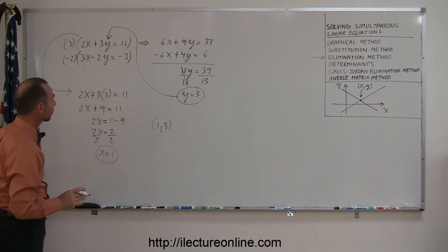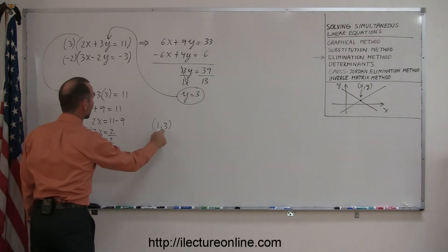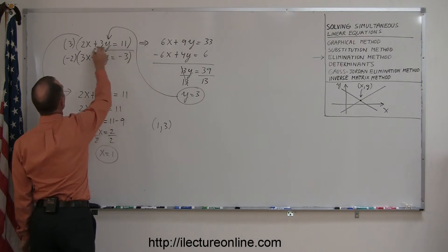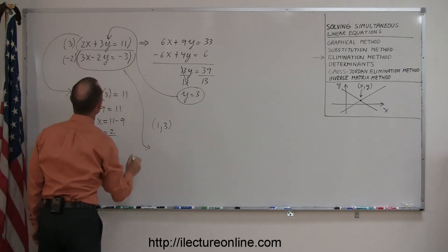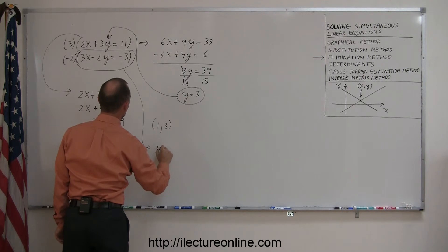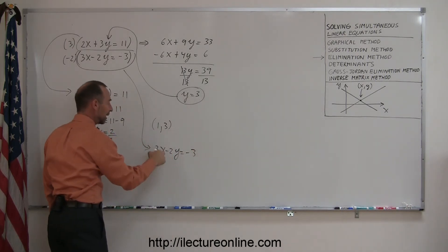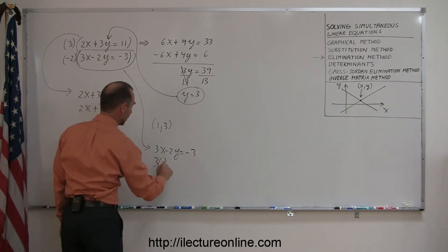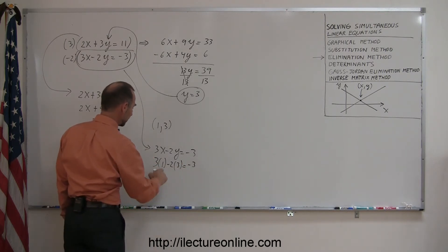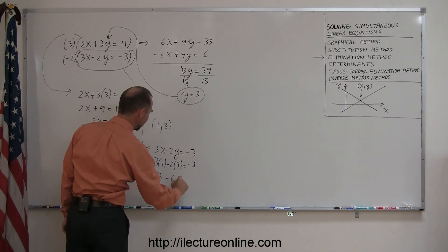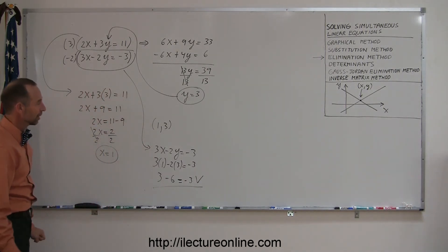Just to make sure we did this correctly, we're going to plug in 1 and 3 into the other equation. Let's take the other equation right here and move it down here. We get 3x minus 2y equals negative 3. Plug these numbers for x and y into this equation. 3 times 1 minus 2 times 3, and see if that's equal to negative 3. 3 times 1 is 3, minus 2 times 3 is minus 6. And yes, indeed, that is indeed equal to negative 3. So we can see that we solved the problem correctly.